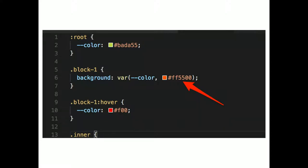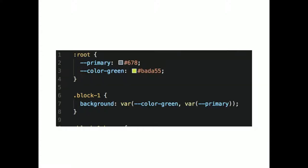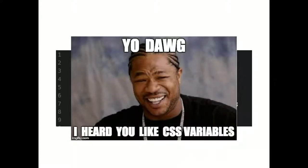CSS variables also allow a default value. For example, if the color custom property is not set, it will fall back to an orange value. And of course, you can set your fallback to be another variable if you so desire.